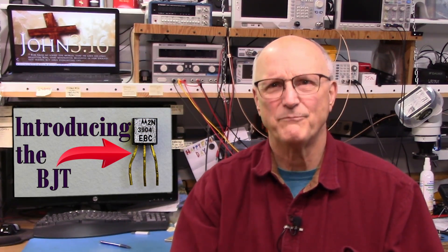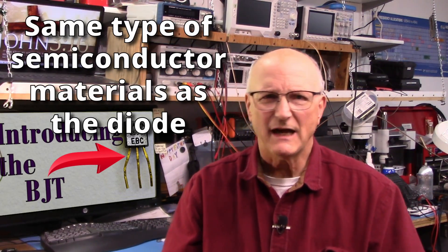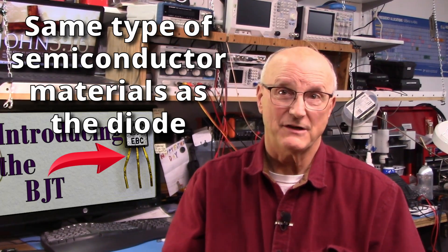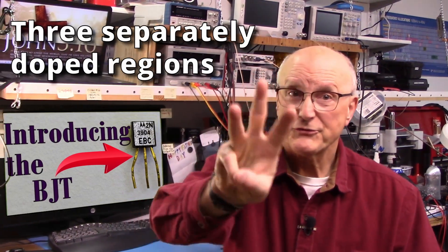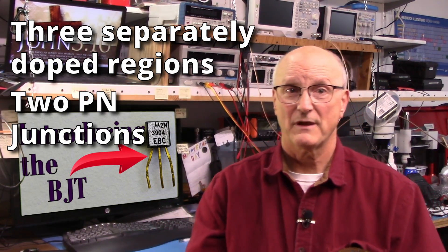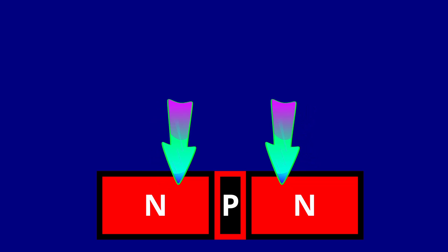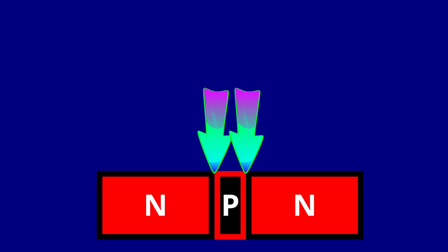To begin with, I'll start with their basic structure. A BJT uses the same types of materials, just arranged a bit differently. It has three separately doped regions and two PN junctions. Shown here on the screen is what is referred to as an NPN transistor. You can see that we have some P-type material sandwiched between two N-type materials. The same action that I described in the PN junction of the diode also applies to each of the two PN junctions that you see here.